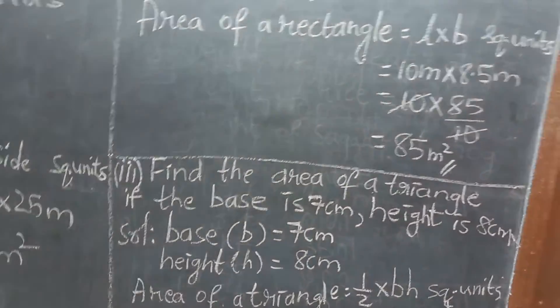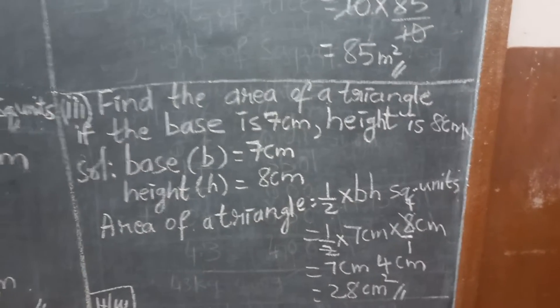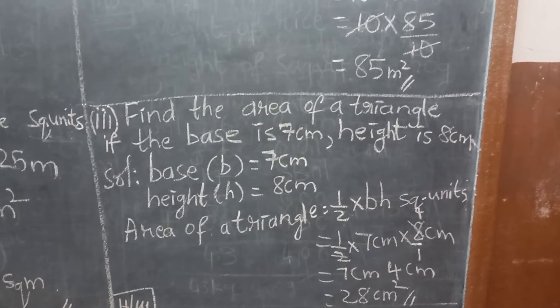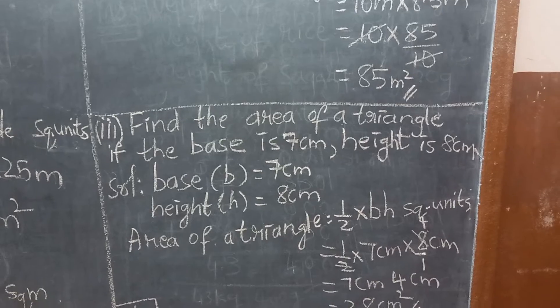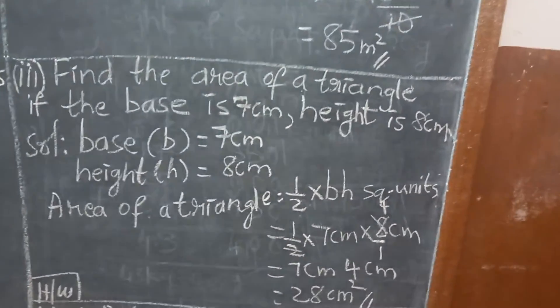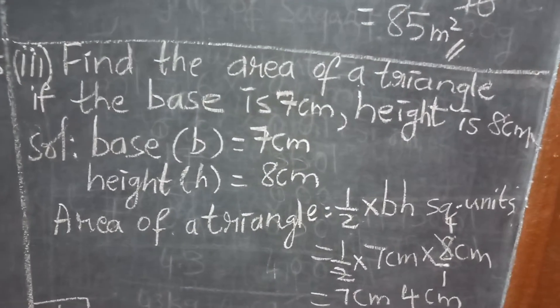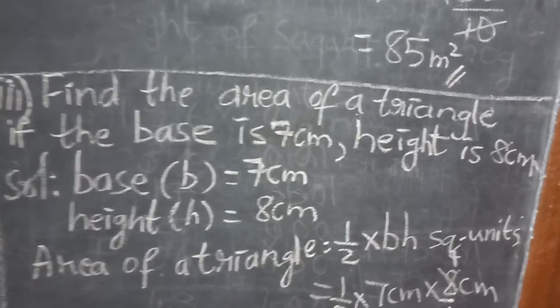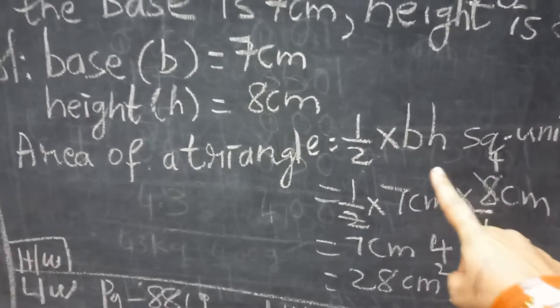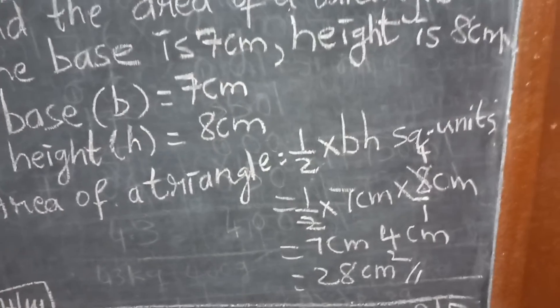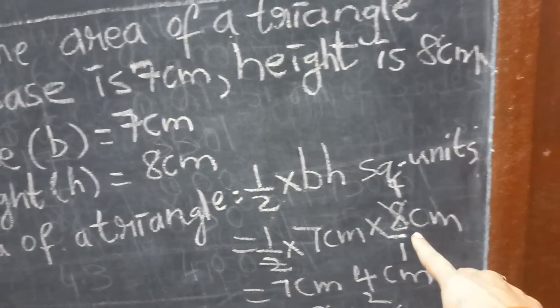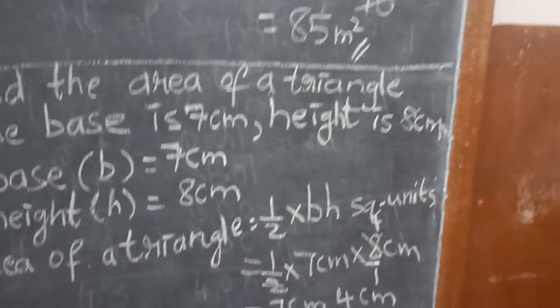Now, area of the triangle. I hope you understand area of the rectangle. Now, area of the triangle. Triangle में क्या रहा था, base into height. Find the area of the triangle. If the base is 7 centimeters, height is 8 centimeters. Base कितना है, B. We are writing base as B, 7 centimeters. Height as H, 8 centimeters. Area of the triangle का formula क्या है? Half into base into height square units.